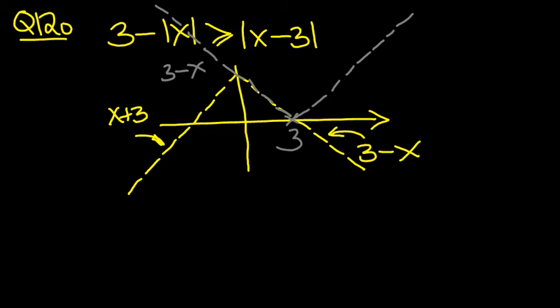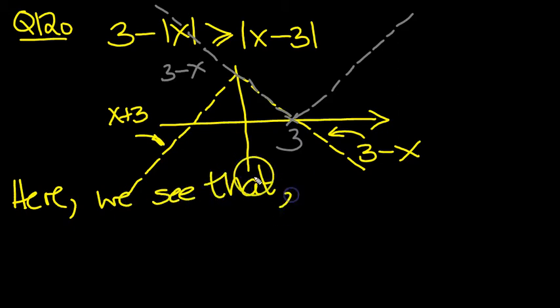So we now ask ourselves, back to the question, when is the yellow line above or equal to the grey line? Well, you can see it's here. So here we see that. By inspection, these values are fine, because the yellow line, which is this part here, lies above or is equal to the grey line.